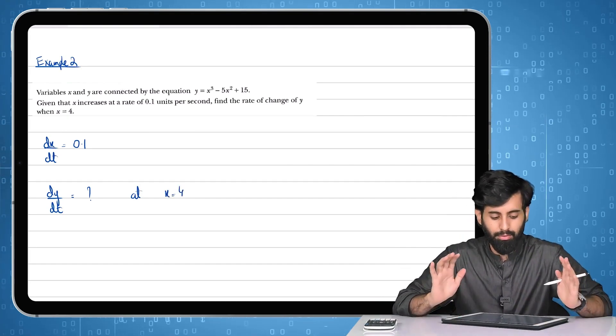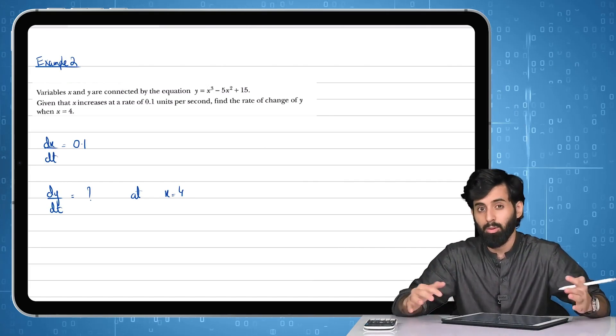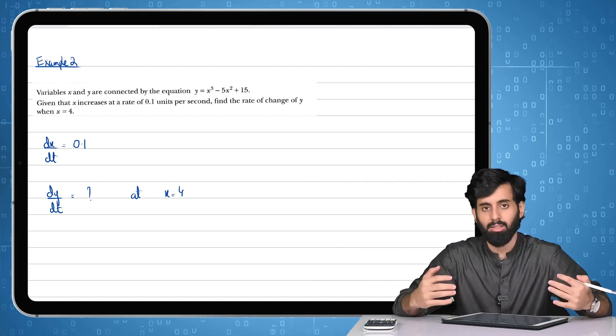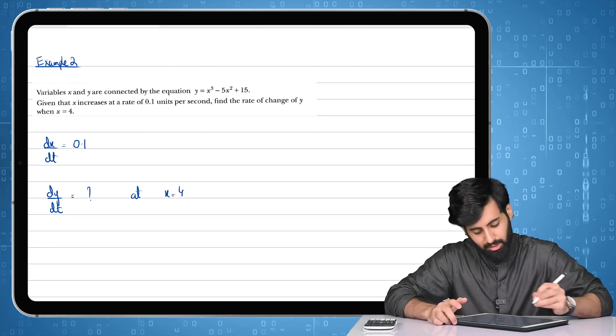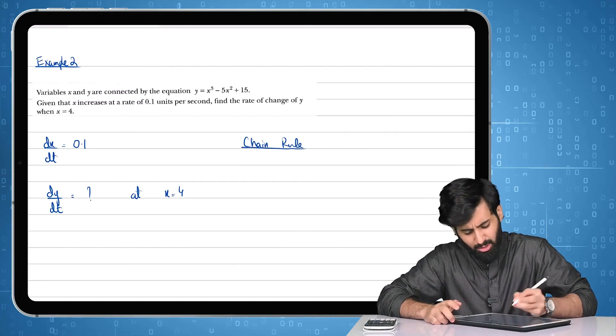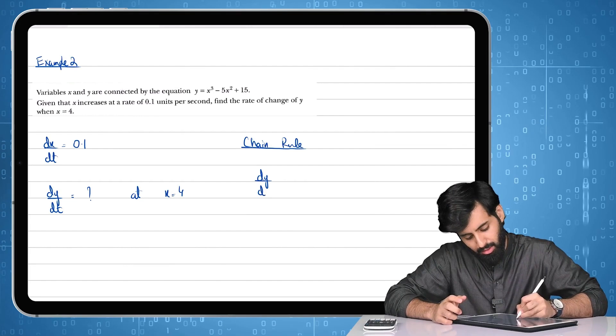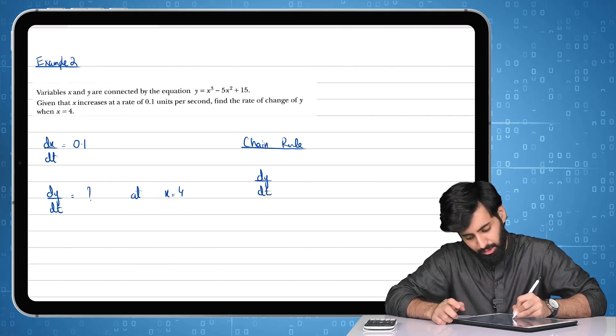First thing we need to do is we need to make an equation and that equation which I am going to make is called chain rule. Let's write this down, this right here is chain rule. Now learning how to make a chain rule is very simple.